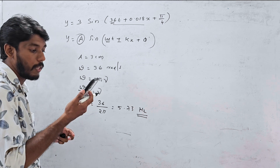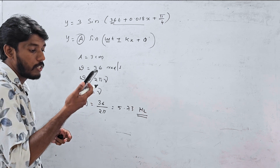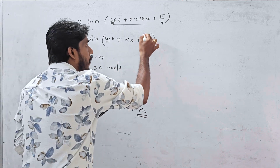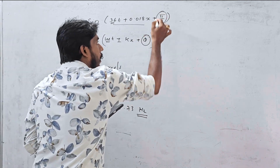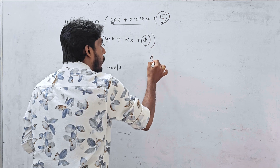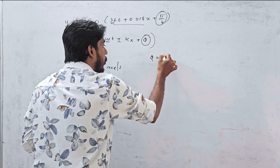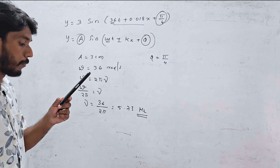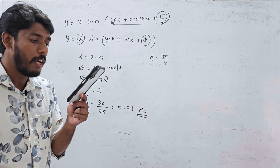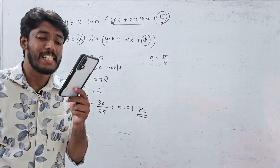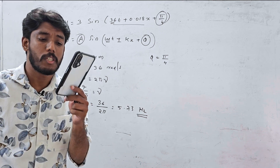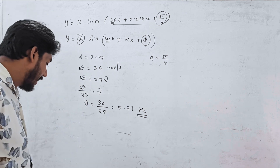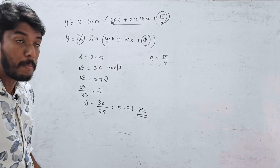The initial phase is π/4. What is the least distance between two successive crests? That is the wavelength lambda.